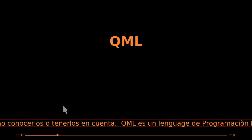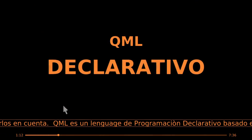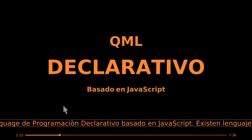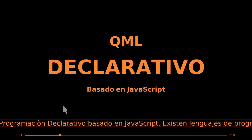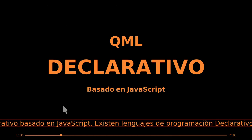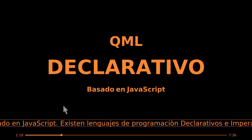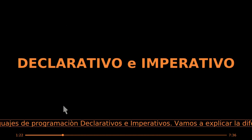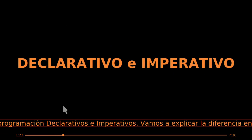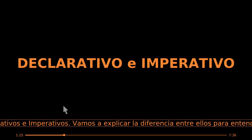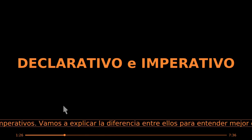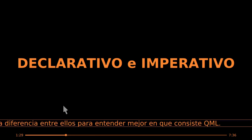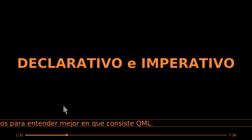QML es un lenguaje de programación declarativo basado en Javascript. Existen lenguajes de programación declarativos e imperativos. Vamos a explicar la diferencia entre ellos para entender mejor en qué consiste QML.